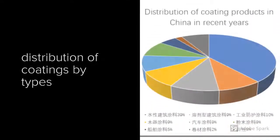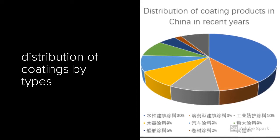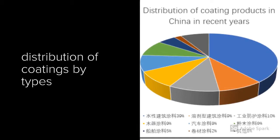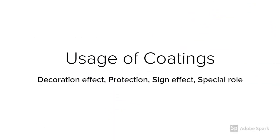Output of China coatings for recent 10 years is shown as a table, and distribution of coatings by types as a chart. Coatings are used for decoration, protection, sign effect, and special roles.